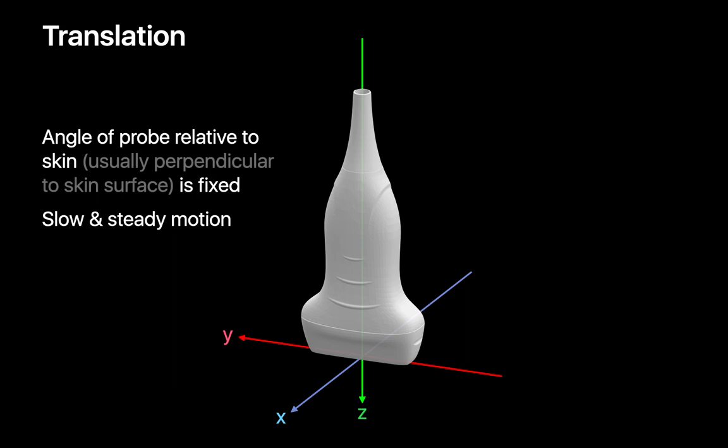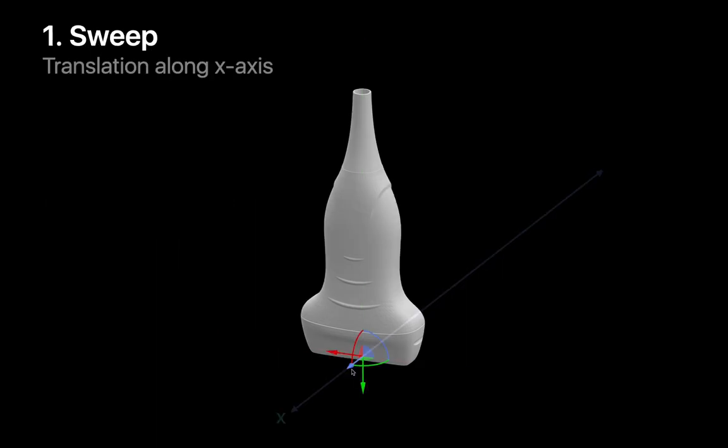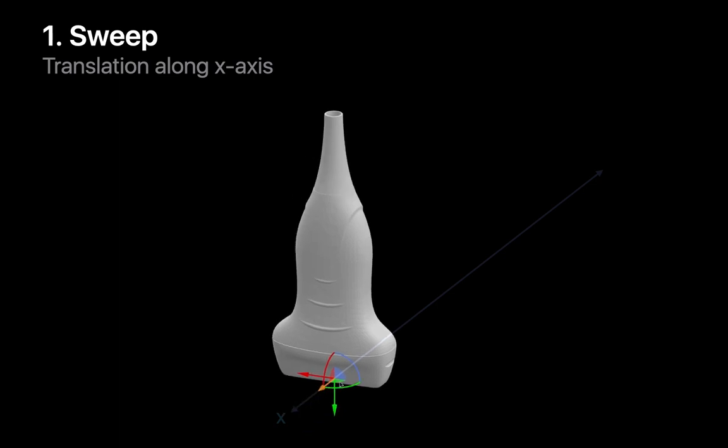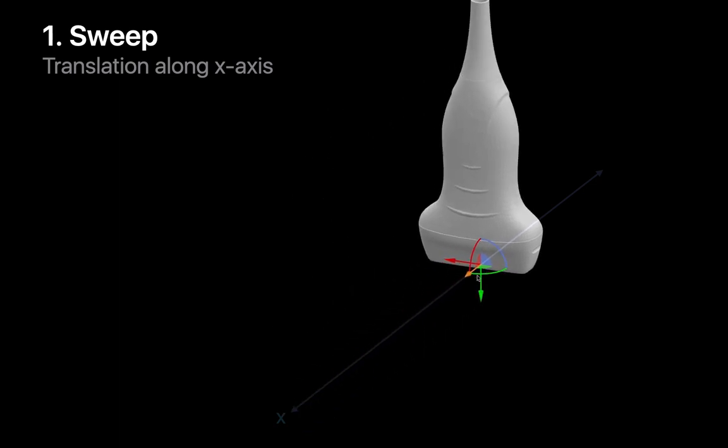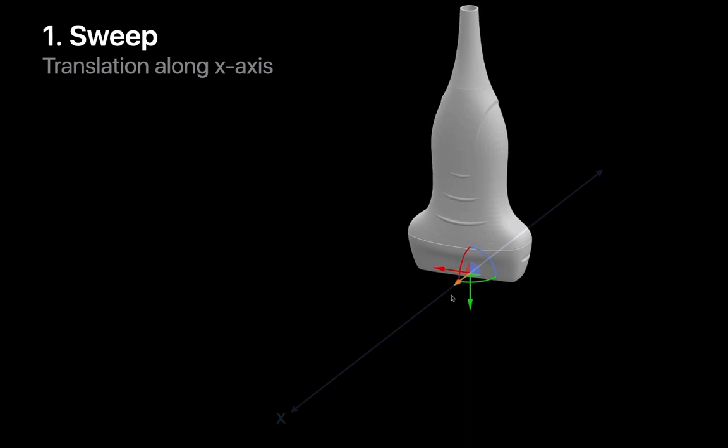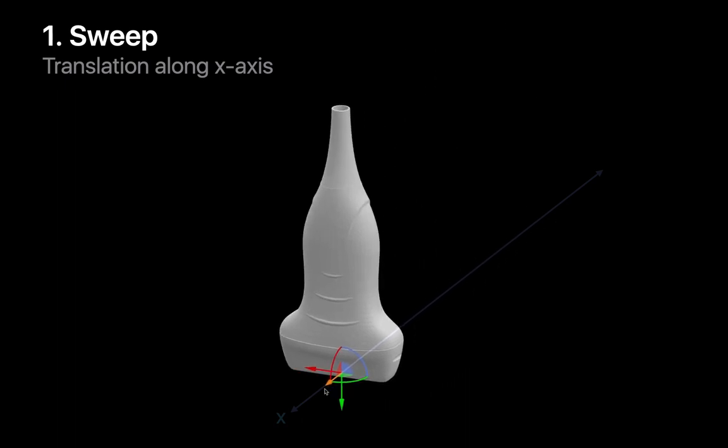When translating the probe, the angle of the probe relative to the skin is usually perpendicular and fixed throughout the motion. The translation motion is usually performed in a slow and steady way. Here's an example of what sweeping with a probe looks like as the probe head translates along the x-axis while its angle relative to the skin surface remains perpendicular and fixed.